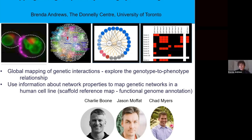What I'm going to tell you about today: I'll start by summarizing work we've done in yeast. The goal of that work was to map the first full genetic interaction network for any system, so that we could discover network properties that might guide us to more efficiently map genetic networks in more difficult systems such as a human cell line. Genetic networks tend to be very rich in functional information, useful for predicting the function of uncharacterized genes and hence for human functional genome annotation.